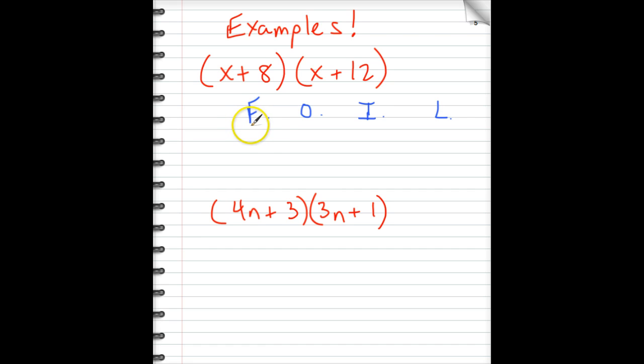The F in FOIL stands for the first. So you multiply the first terms in each parenthesis. So that would be this guy and this guy. So x times x is x². Now, O stands for outside. The outside terms are the furthest apart, this one and this one. If we multiply together, x times 12, we get positive 12x.